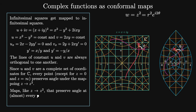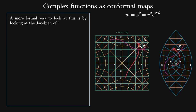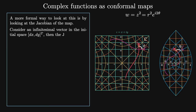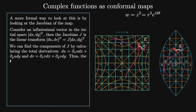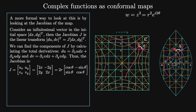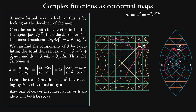Maps like z goes to z squared that preserve angle at almost every point are called conformal. Looking at this more formally via the Jacobian: an infinitesimal vector dx dy gets mapped to du dv, where J = [[ux, uy],[vx, vy]], which for this map equals [[2x, −2y],[2y, 2x]]. In polar coordinates this equals 2r times [[cos θ, −sin θ],[sin θ, cos θ]], a rotation matrix. Locally, the transformation z → z² is a rescaling by 2r and a rotation by theta. Any pair of curves meeting at a point z₀ with angle alpha will be rotated by the same angle theta, so angles are preserved.